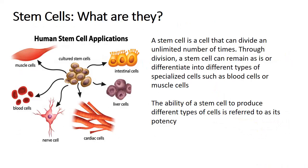The last part of this chapter is mitosis in stem cells and cancer. Stem cells are cells that are able to divide an unlimited number of times and can differentiate into different types of specialized cells, such as blood cells or muscle cells. You can culture stem cells to make blood cells, muscle cells, intestinal cells, liver cells, or even cardiac and nerve cells — though some of these are still at experimental stages. The ability of stem cells to produce different types of cells is referred to as their potency.